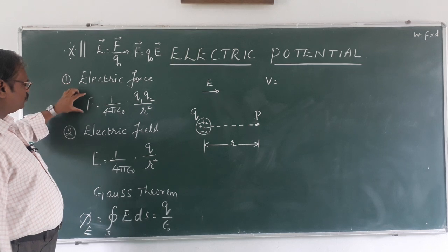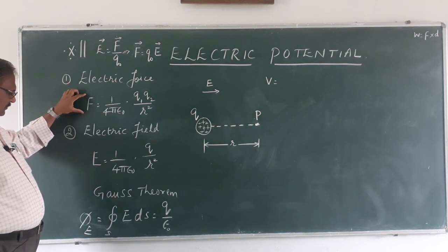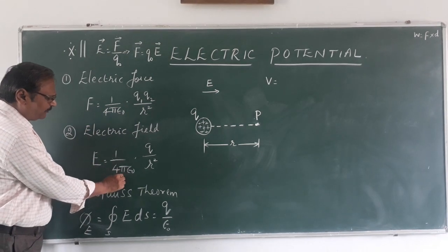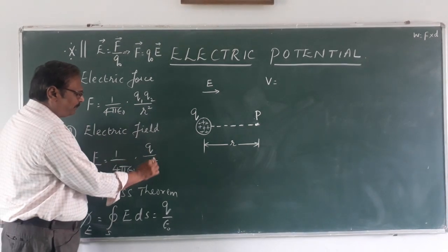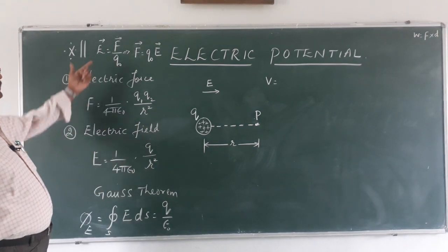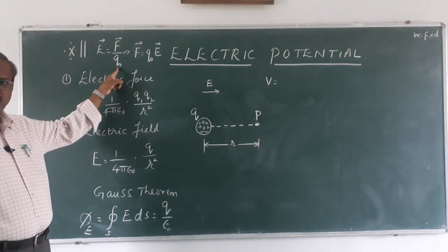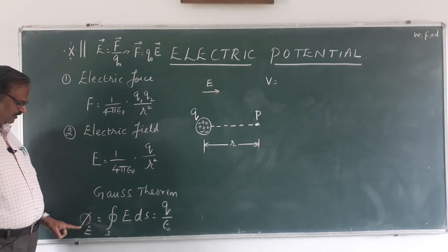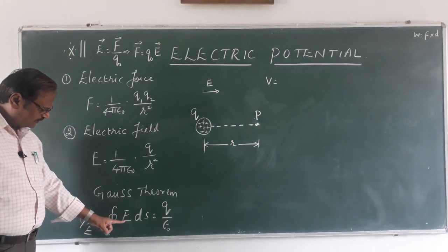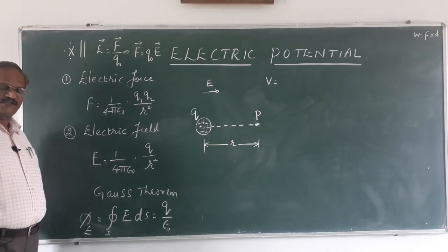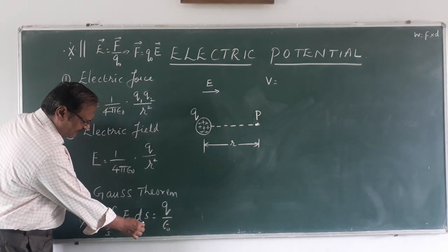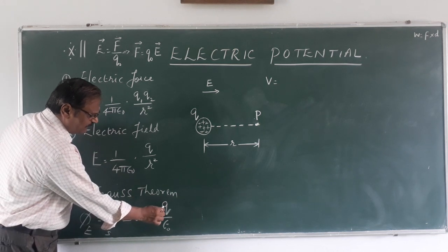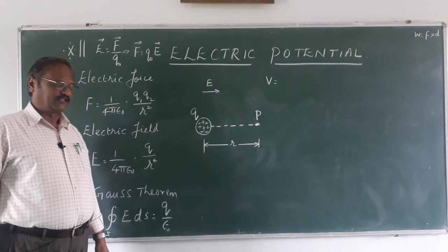We studied the force between the two charges q1 and q2. Second, we learned about electric field, which is 1 upon 4 pi epsilon naught, q upon r square — the electric field is the force acting on a test charge. We also learned about Gauss theorem, which talks about electric flux written as the surface integral of the electric field over a closed surface, equal to the charge enclosed within that surface.